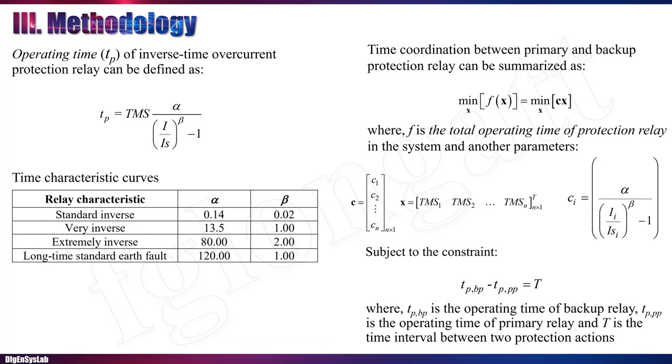For instance, using standard inverse, very inverse, extremely inverse, or long-time standard curve shapes, you will have characteristics with different shapes based on parameters alpha and beta. What we want to do in this paper is define a methodology to create coordination in several relays in a radial topology, and define the main indicators of the inverse curve — in this case the TMS and the time separation between devices.